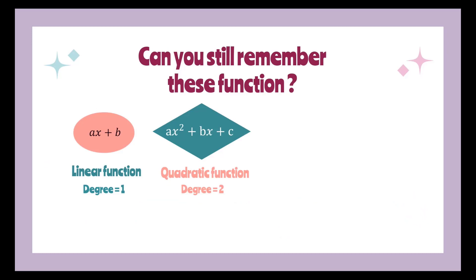Can you still remember these functions? Ax plus b, and ax squared plus bx plus c. Ax plus b is a linear function with degree 1, because the highest power of x has the power 1. For the quadratic function, we call it a function with degree 2 because the highest power of x is 2.